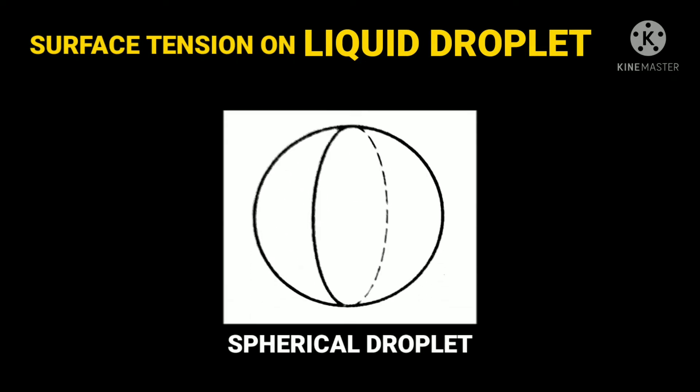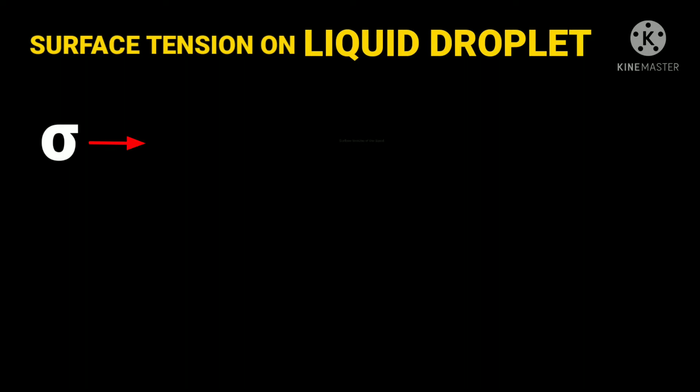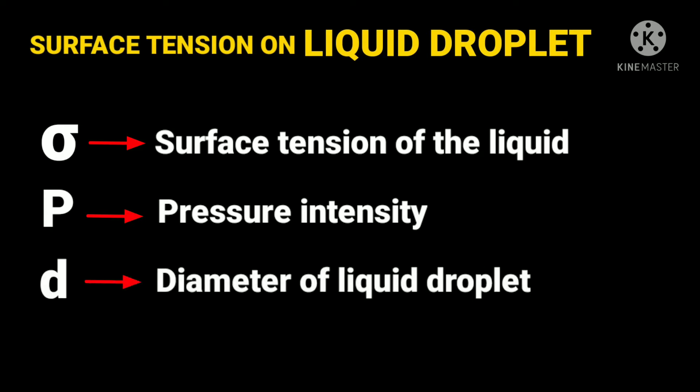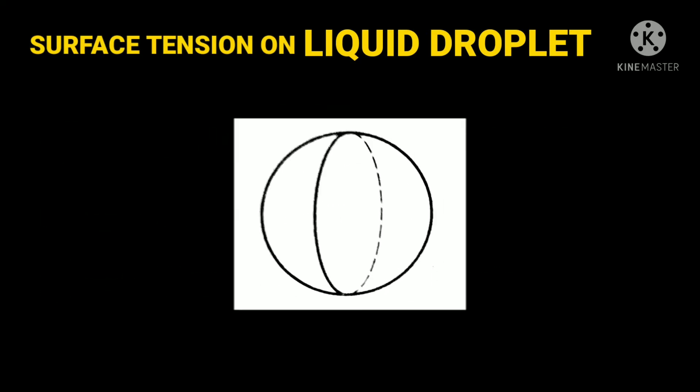Now, let us know about surface tension on liquid droplet. To explain this, let us consider a small spherical droplet of a liquid of radius as R. On the entire surface of the liquid, the tensile force due to surface tension will be acting. Let sigma be the surface tension of a liquid, P be the pressure intensity inside the liquid droplet, and d is the diameter of a liquid droplet. Now, let us assume that the droplet is cut into two halves.